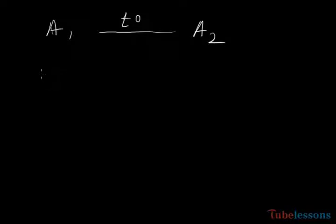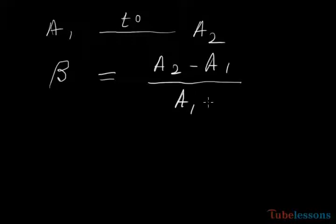Therefore, the coefficient of superficial expansion, written as beta, equals the increment of area (A2 minus A1) divided by initial area A1 times the increment of temperature T. So beta equals (A2 minus A1) divided by (A1 times T).